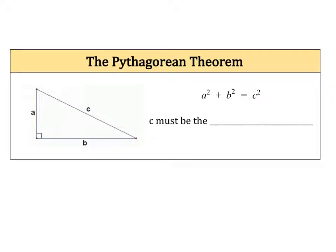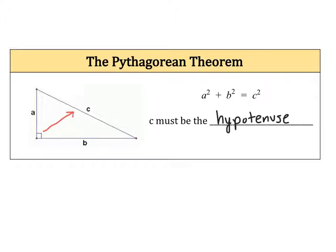The Pythagorean Theorem states that if we have a right triangle, then A squared plus B squared will always equal C squared. The most important thing to know about this is that C must be the hypotenuse. For A and B, it doesn't matter which leg you use, but C must be the hypotenuse. Remember, you can always find the hypotenuse by looking across from your 90 degree angle.